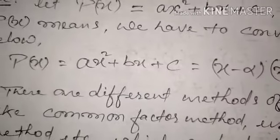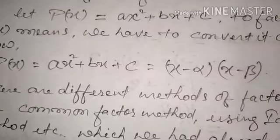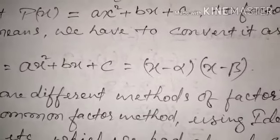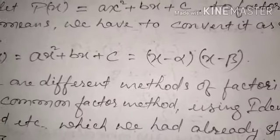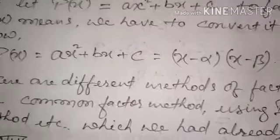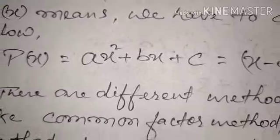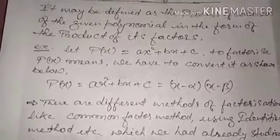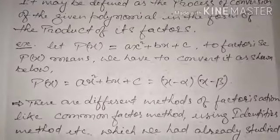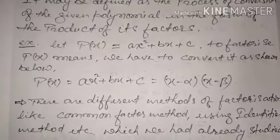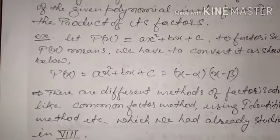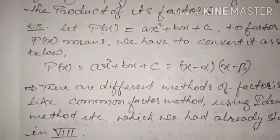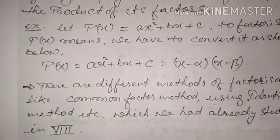Factorization says that you have to convert ax² + bx + c into the form (x − α)(x − β). So we can call (x − α) and (x − β) the factors of the polynomial p(x) = ax² + bx + c. Simply, factorization means converting a given expression from its multi-term form to a product-of-factors form.